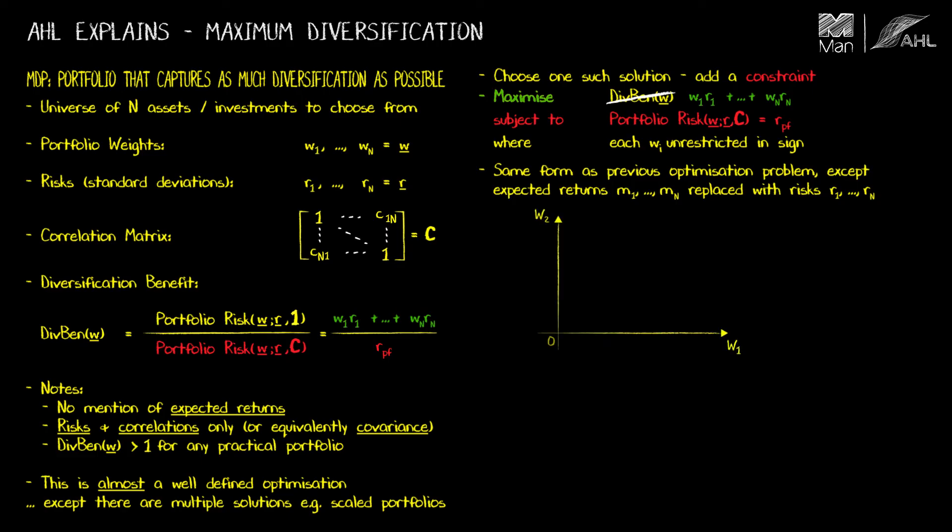In terms of drawing the picture, we have a red risk ellipse like we had before, but now the sloping line through the origin is a line in the direction of the risks rather than the expected return, and the green objective function is of course perpendicular to that sloping line.